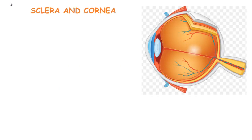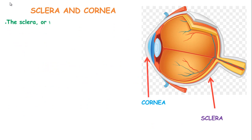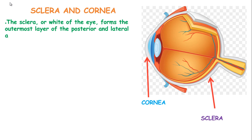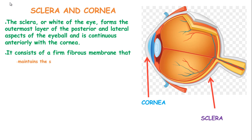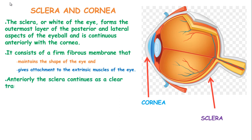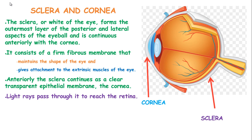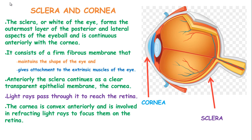The sclera, or the white of the eye, forms the outermost layer of the posterior and lateral aspect of the eyeball and is continuous anteriorly with the cornea. The sclera consists of a firm fibrous membrane that maintains the shape of the eye and gives attachment for the extrinsic muscles of the eye. Anteriorly, the sclera continues as a clear transparent epithelial membrane known as the cornea. Light rays pass through it to reach the retina, and the cornea is convex anteriorly and is involved in refracting light rays to focus them on the retina.